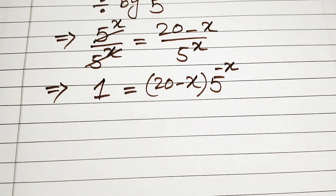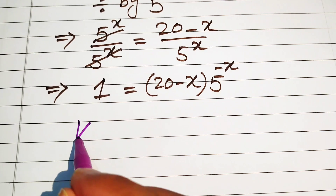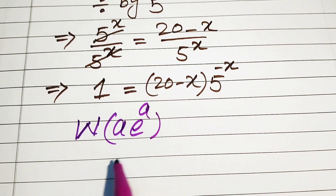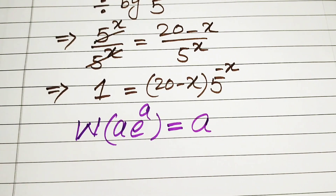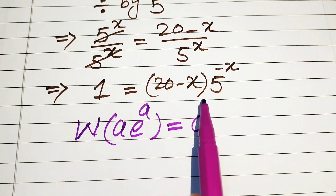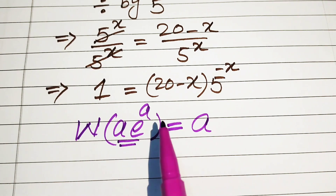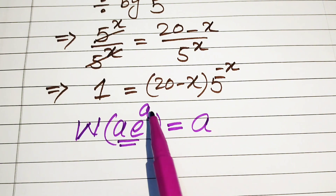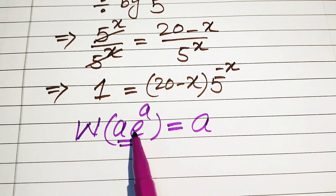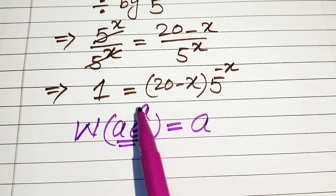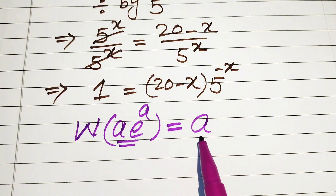Now we introduce the Lambert W function and solve this problem with its help. The Lambert W function is stated as: W of a times e to the power of a equals a. This shows that if we first make the right hand side in this form — where we have e and its exponent a multiplied — then applying the Lambert W function gives the exponent of e, which is a.